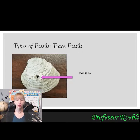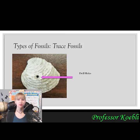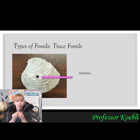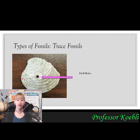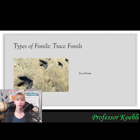Drill holes are another trace fossil type studied by Dr. Joshua Slattery. When you see a clamshell with a hole in it at the beach, that's a borehole made by a predatory sea snail. The snail uses its foot to hold the clam shut and a radula — a tongue-like structure covered in tiny teeth as hard as diamonds — to bore through the shell, then eats the clam alive. These boreholes have been found on shells hundreds of years old, showing this predator-prey relationship has existed for a long time.